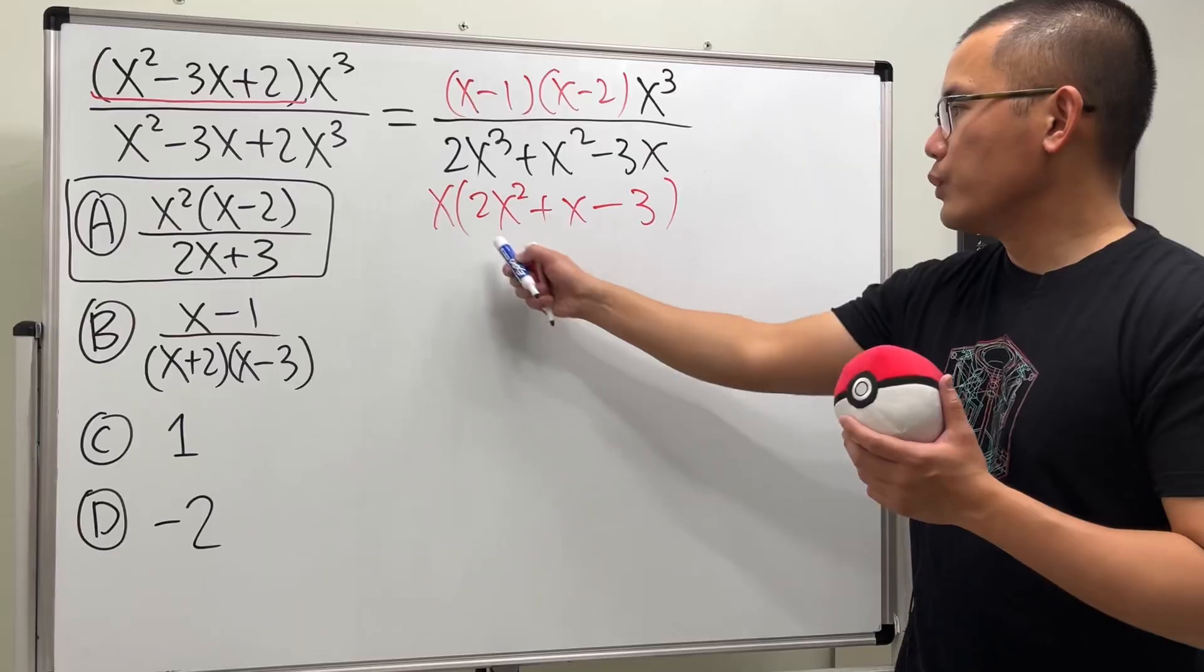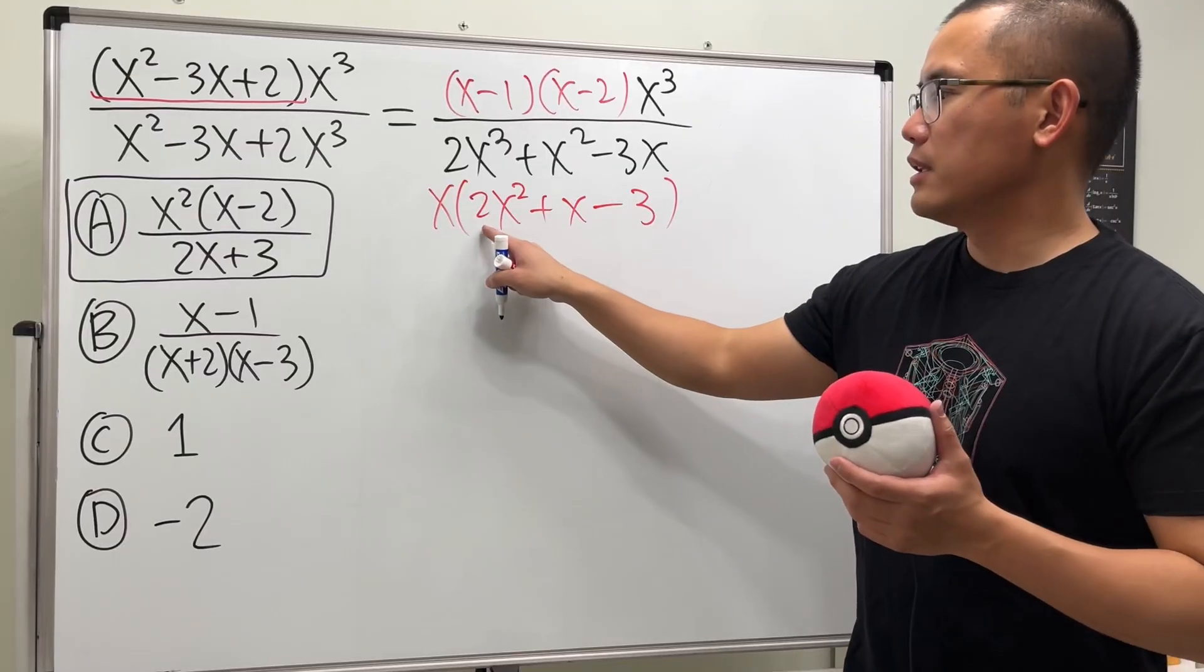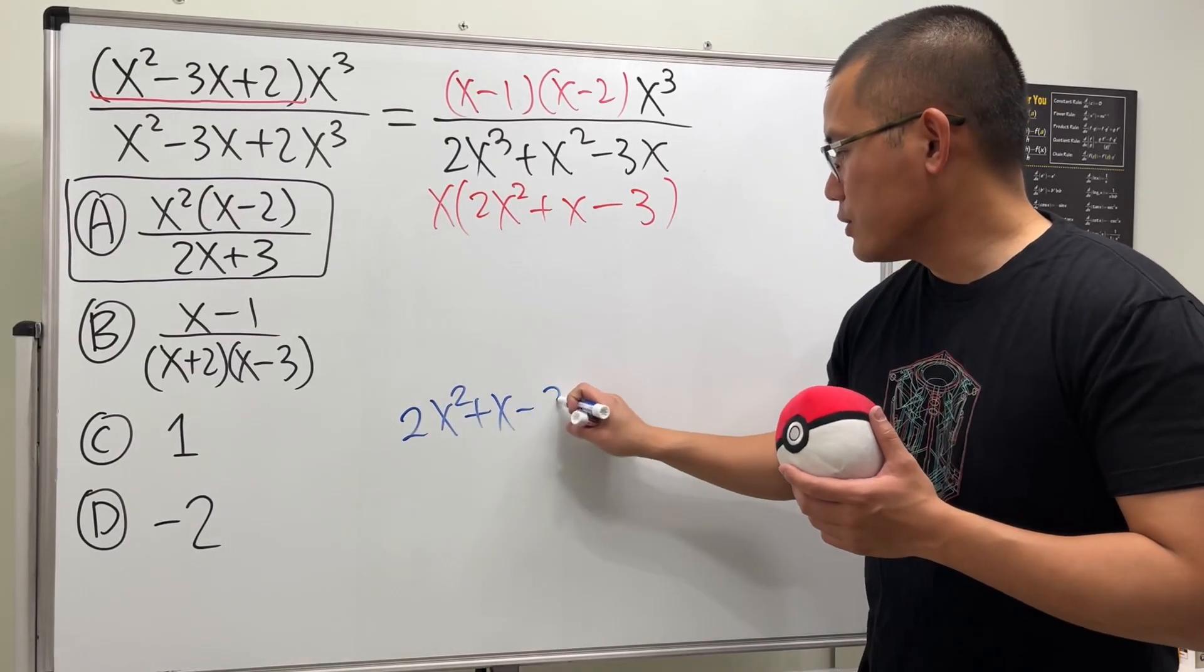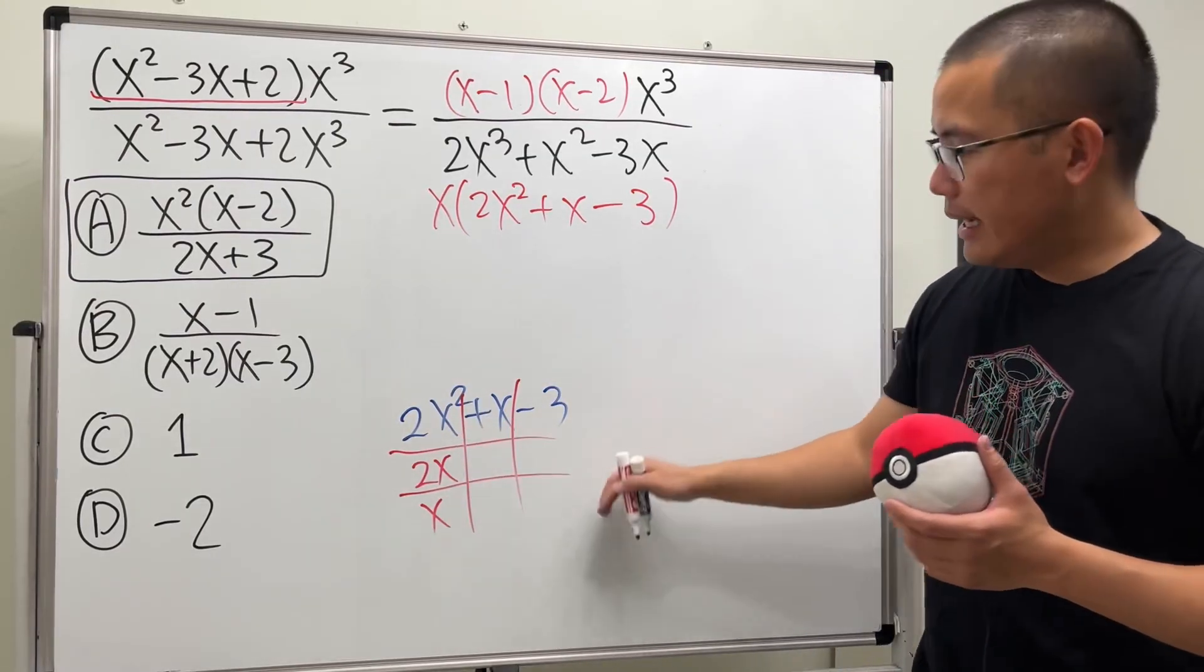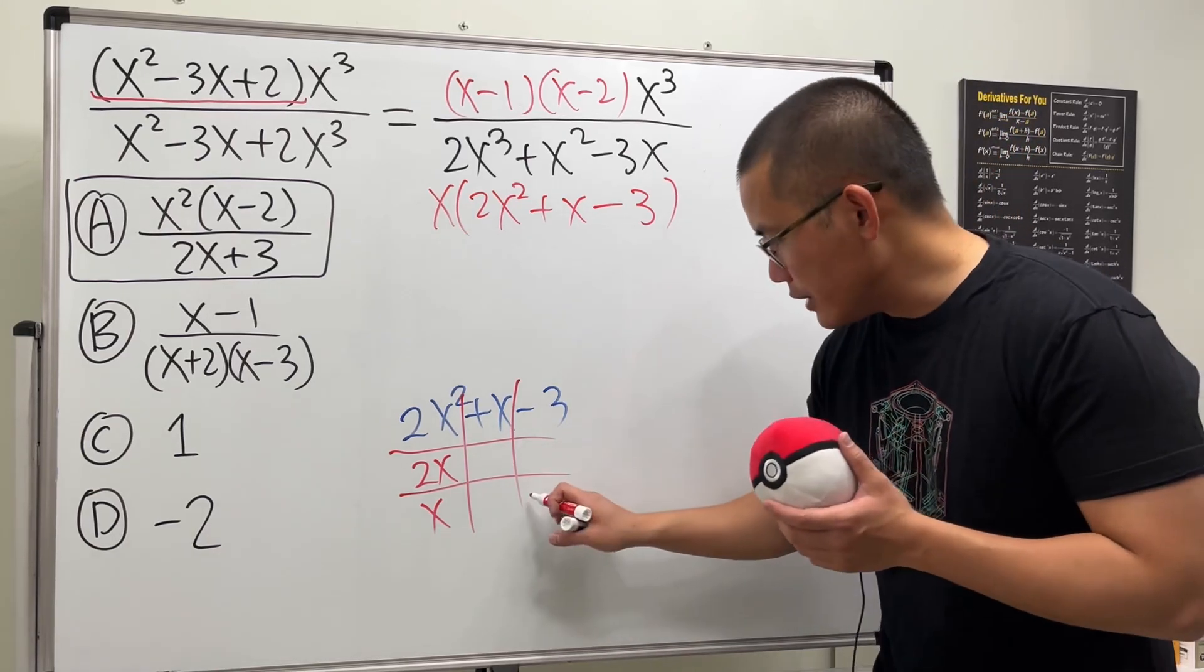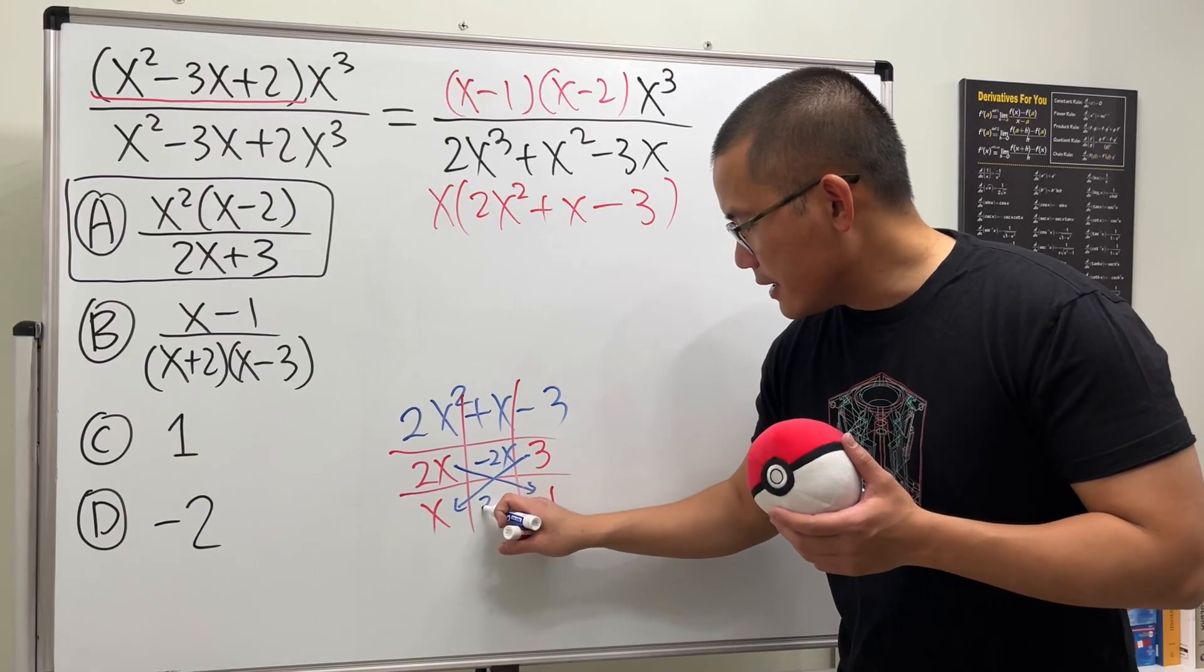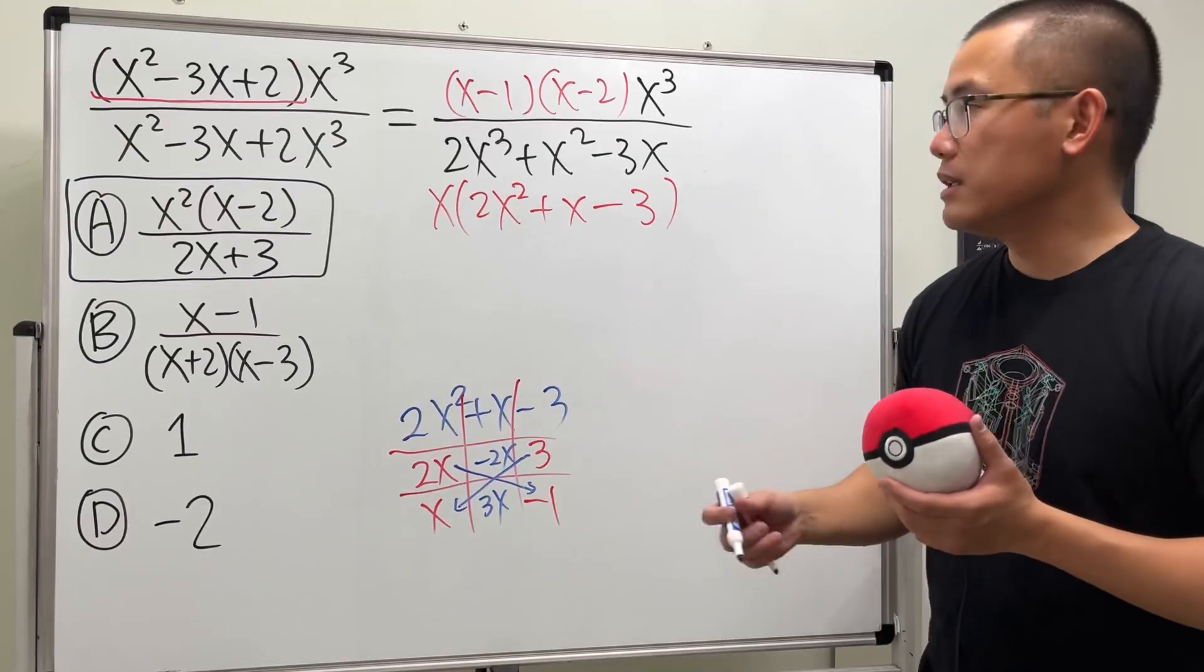We have a quadratic trinomial and we can factor it. Let me show you the tic-tac-toe method here because the coefficient of x² is 2, so it's not as easy to factor. We have 2x² + x - 3. Do the tic-tac-toe boxes - we need 2x times x to get 2x², and to get -3 we use -1 times 3. We put -1 here and 3 here because 2x times -1 gives us -2x and 3 times x gives us 3x. Together we end up with positive x, so we have the right combination.